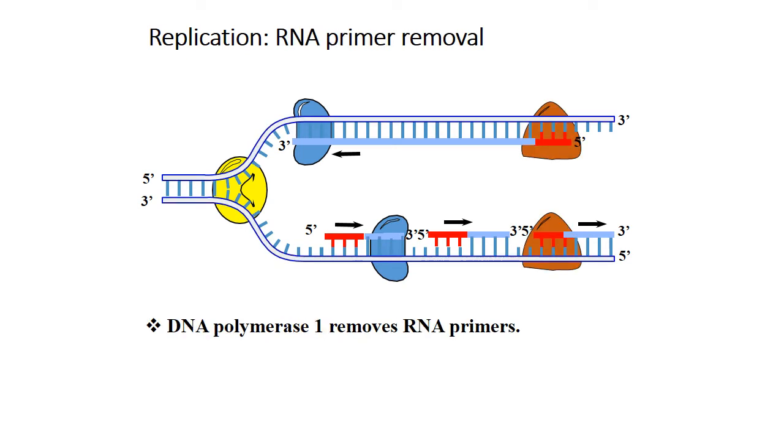Once the Okazaki fragments have been produced, as much as the synthesis is discontinuous, the strand has to be continuous. Because of that, DNA polymerase 1 removes the RNA primers. Remember the DNA has to be fully DNA. The one that removes the RNA primers, which are in red, is DNA polymerase 1. It will remove the primers, and after removing the primers, it will add the DNA nucleotides.